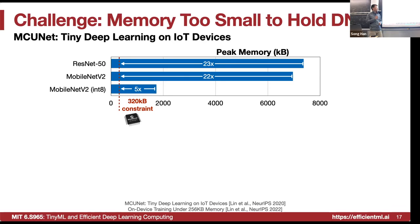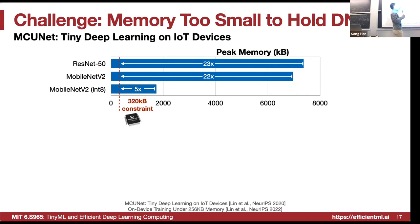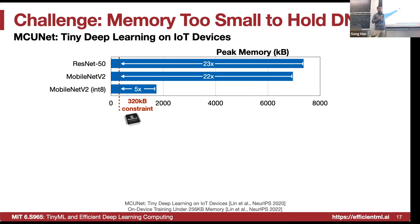Deploying neural nets on microcontrollers is challenging because existing neural nets like ResNet-50, MobileNetV2, or even the quantized version of MobileNetV2 — which is four times smaller than the FP32 version — are too big. They don't fit within the SRAM constraints: there are only a couple hundred kilobytes of SRAM, while these models require as much as six or seven gigabytes. Techniques like quantization, pruning, and neural architecture search play a very important role here, but even after quantization it can still be five times too big.